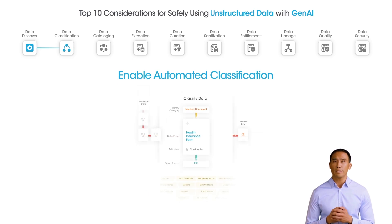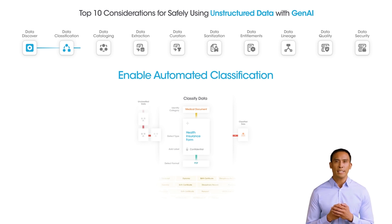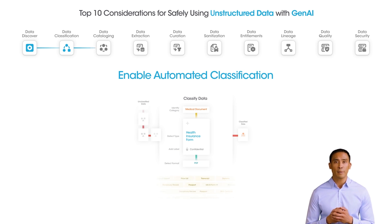Classification enables security teams to prioritize protecting data with high sensitivity levels. Organizations must use built-in rules that utilize AI, ML, or advanced NLP to enable classification that goes beyond pattern and keyword matching.